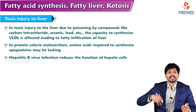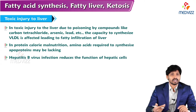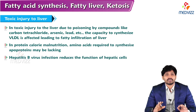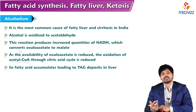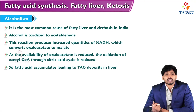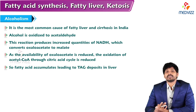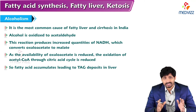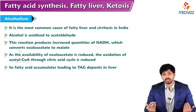In protein-calorie malnutrition, amino acids required to synthesize apoproteins may be lacking. Hepatitis B is a viral infection which attacks the liver cells, depriving hepatic cells and leading to lessened concentration of VLDL and accumulation of TAG in the liver. Alcoholism is also one of the most common causes of fatty liver and liver cirrhosis. Alcohol is oxidized to acetaldehyde; this reaction produces increased quantities of NADH which converts oxaloacetate to malate. As availability of oxaloacetate is reduced, oxidation of acetyl-CoA through the citric acid cycle is reduced, so fatty acids accumulate and are converted to TAG, which gets deposited in the liver.